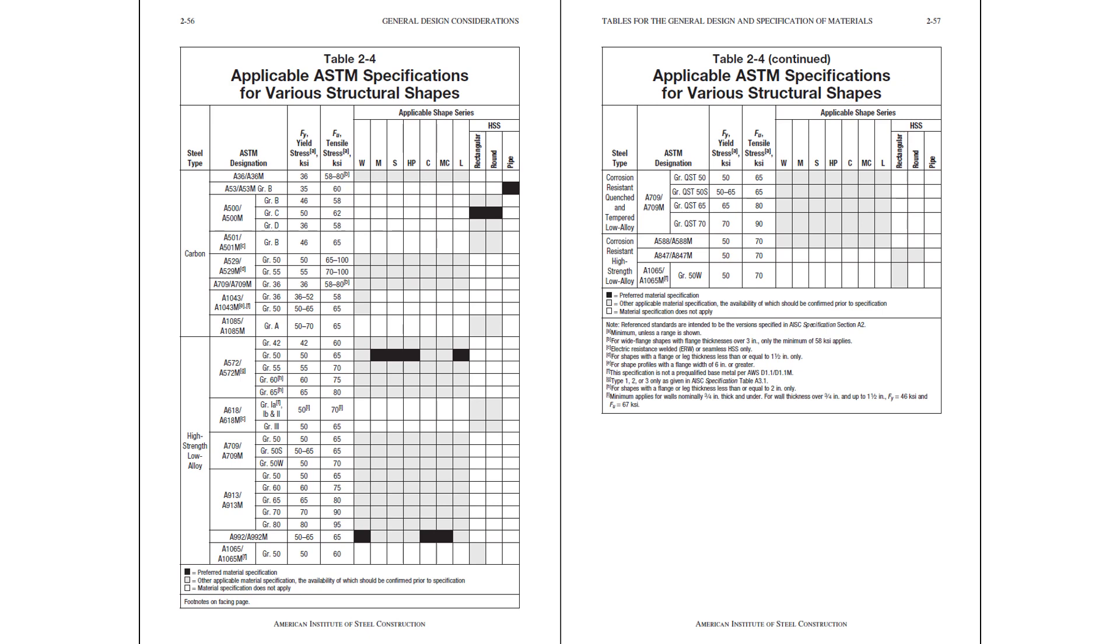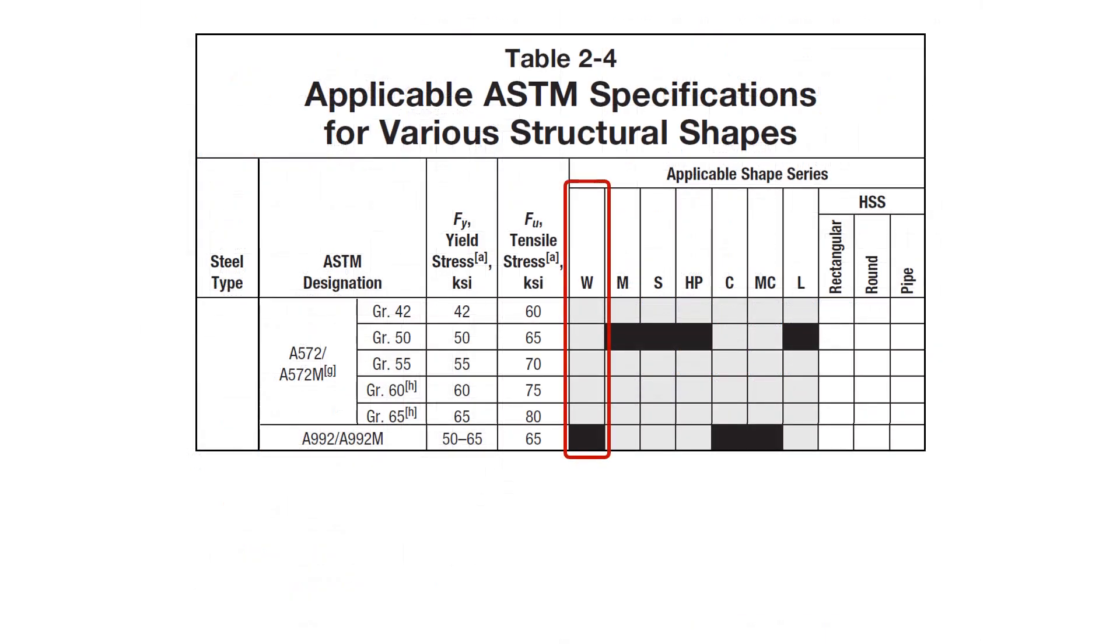First we'll visit table 2-4 out of the AISC steel construction manual where we can find the material specifications for various structural shapes. Zooming in, we can see that for W shapes or for WTs that are cut from W shapes, the preferred material specification is A992. And in this case, A992 was stipulated in the problem statement anyways. For A992 steel, the yield stress Fy is 50 ksi and the tensile stress Fu is 65 ksi.